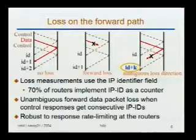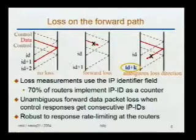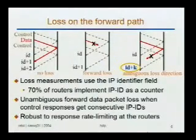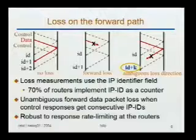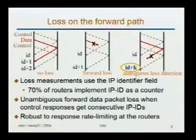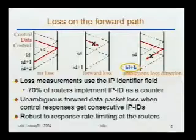Another issue we noticed is distinguishing rate limiting of ICMP responses at the router from actual path-level losses. The three-packet technique Tulip uses helps here: if response rate limiting is implemented at the router and one probe gets lost, probably the other two would also be lost. So if the middle probe gets lost, the third control probe will likely also be lost, in which case Tulip fails to make an inference rather than making an incorrect one — it won't confuse response rate limiting with forward path loss.